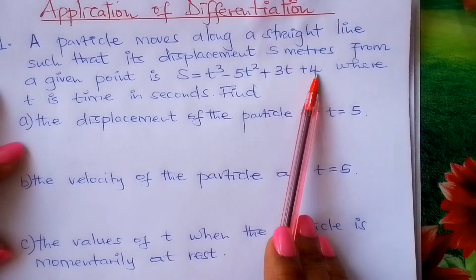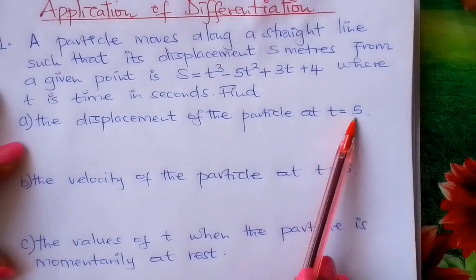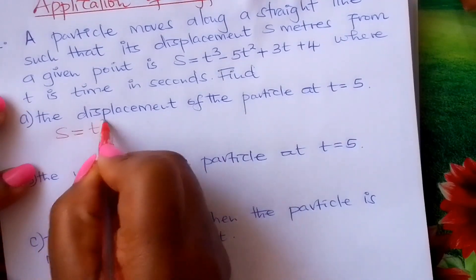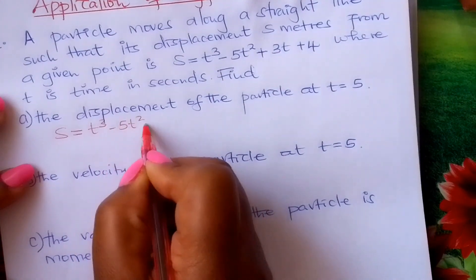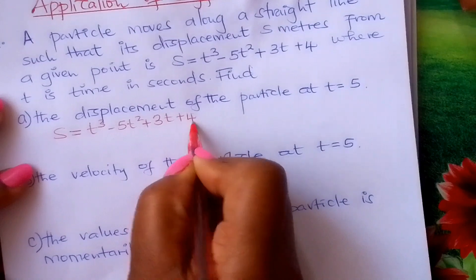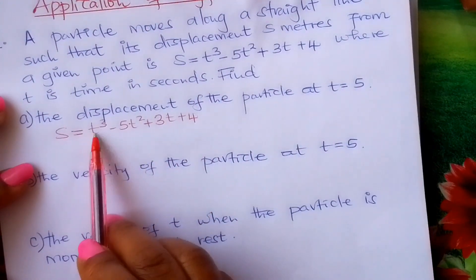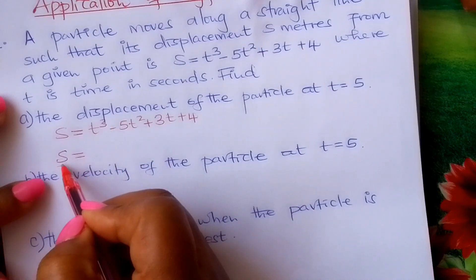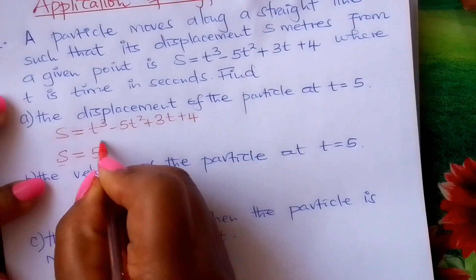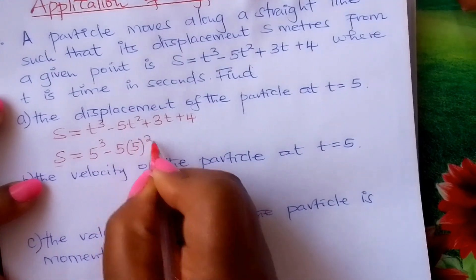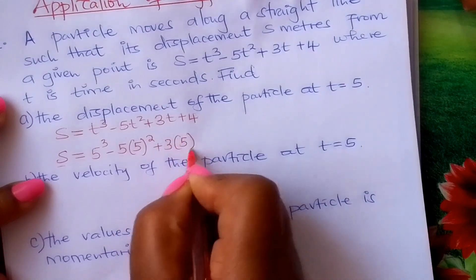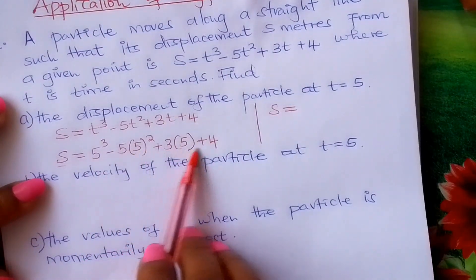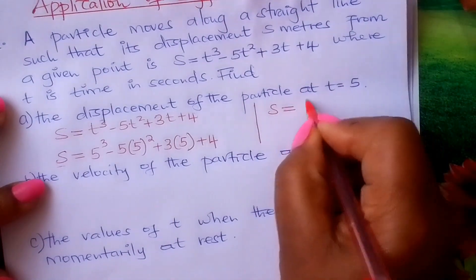This is the expression for displacement. What is the displacement of the particle at t equals 5? We write our expression: s equals t cubed minus 5t squared plus 3t plus 4. Then you substitute t equals 5 — replace t with 5. So displacement s equals 5 cubed minus 5 times 5 squared plus 3 times 5 plus 4. Using a calculator, you should get 19 meters.